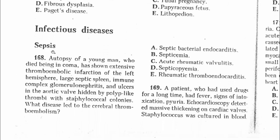Now we move to infectious diseases. Question 168: Autopsy of a young man who died in coma has shown extensive thromboembolic infarction of the left hemisphere, a large septic spleen, immune complex glomerulonephritis, and ulcers in the aortic valve hidden by polyp-like thrombosis with staphylococcal colonies. We are asked what disease led to the cerebral thromboembolism.